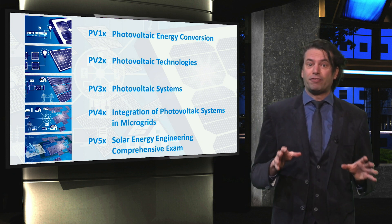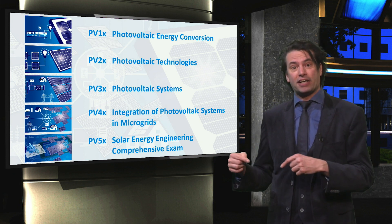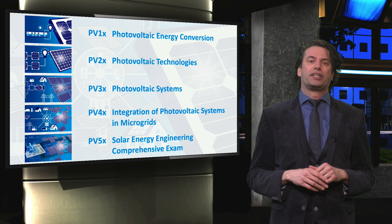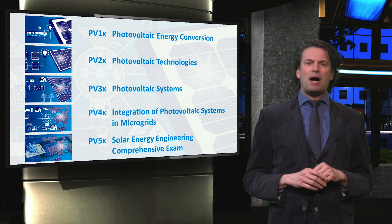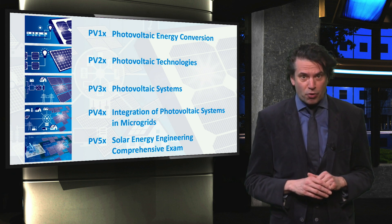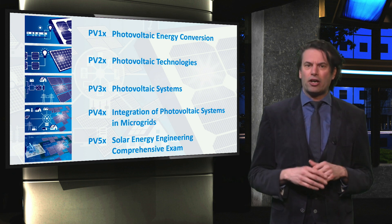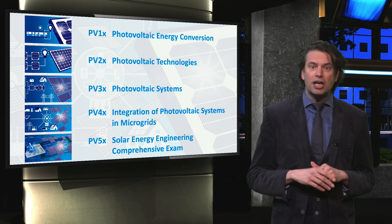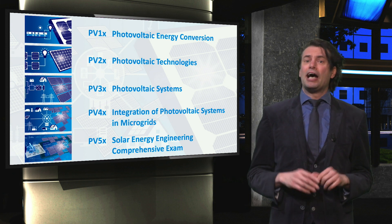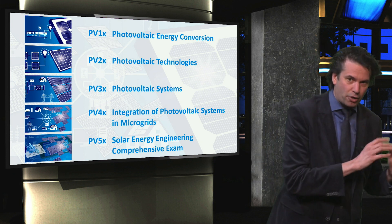If you complete and successfully earn a verified certificate in all four courses, plus pass the comprehensive exam in PV5x, you can earn the Solar Energy Engineering MicroMasters credential. With this credential you can apply to the Master of Science Programme in Sustainable Energy Technology or the Master of Science Programme in Electrical Engineering at TU Delft. You will need to go through the regular admission procedures for MSc students and meet the entry requirements for those MSc programs. If you are admitted, you will be exempted from the courses that are equivalent to the courses you completed in the MicroMasters program.